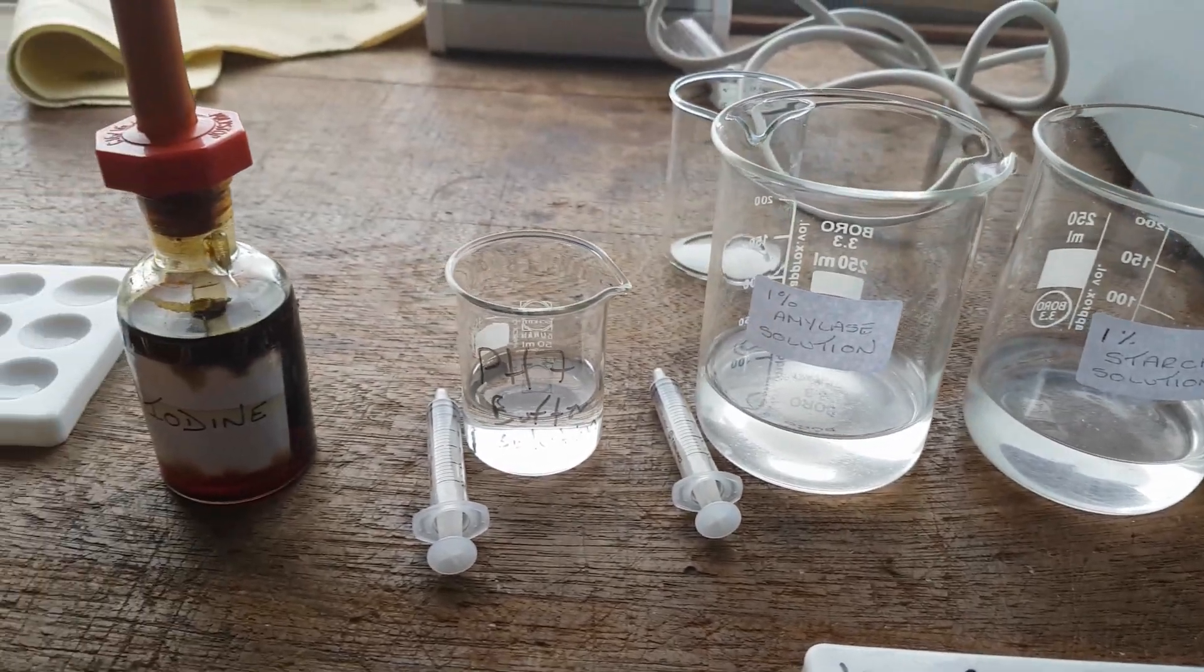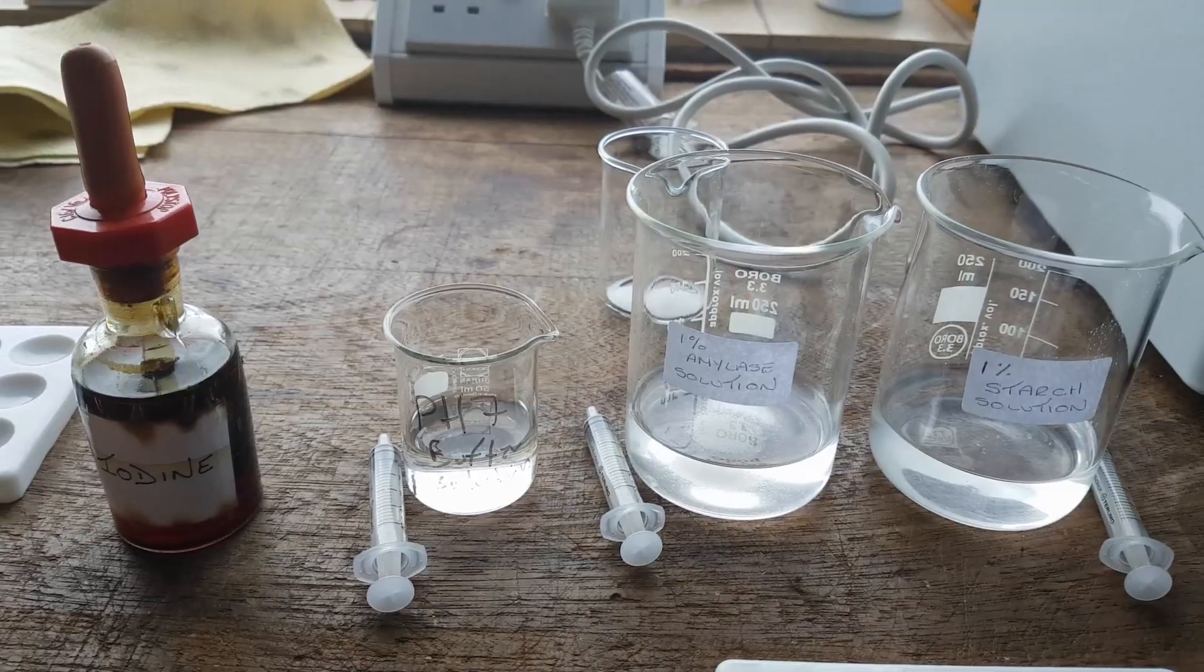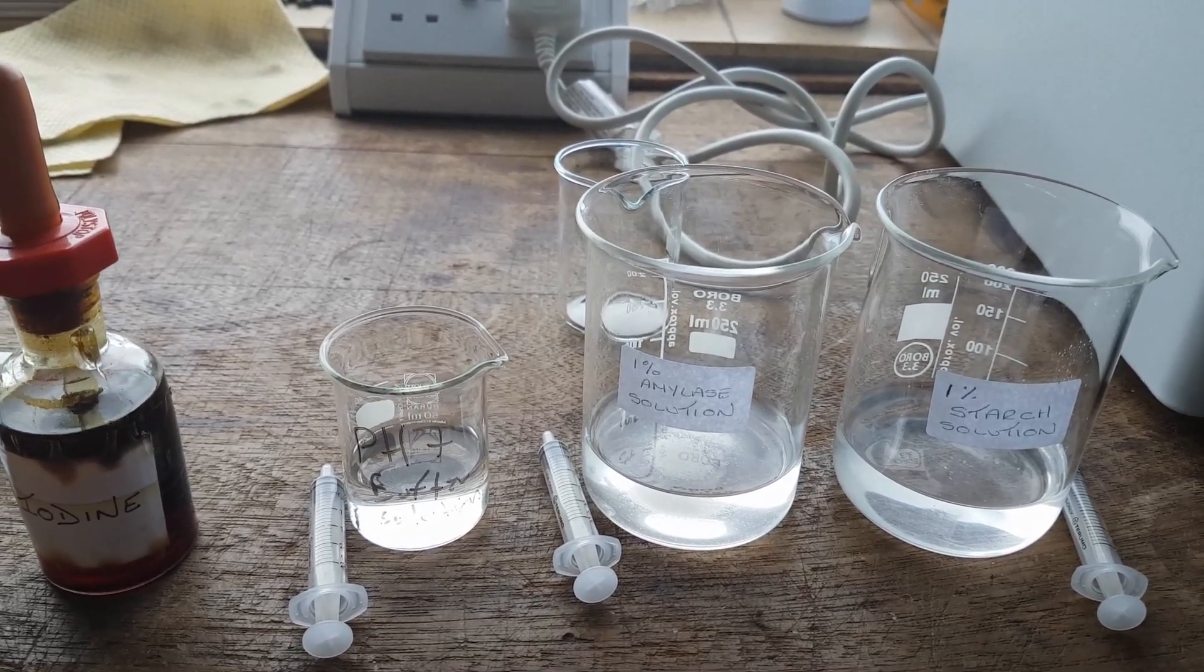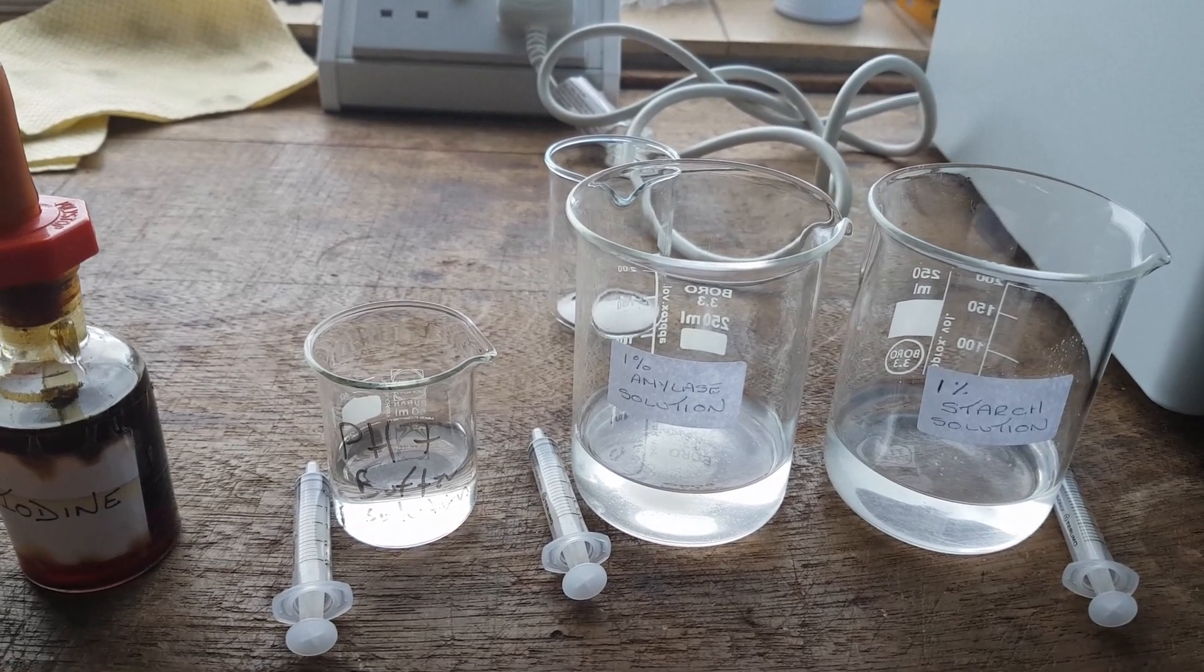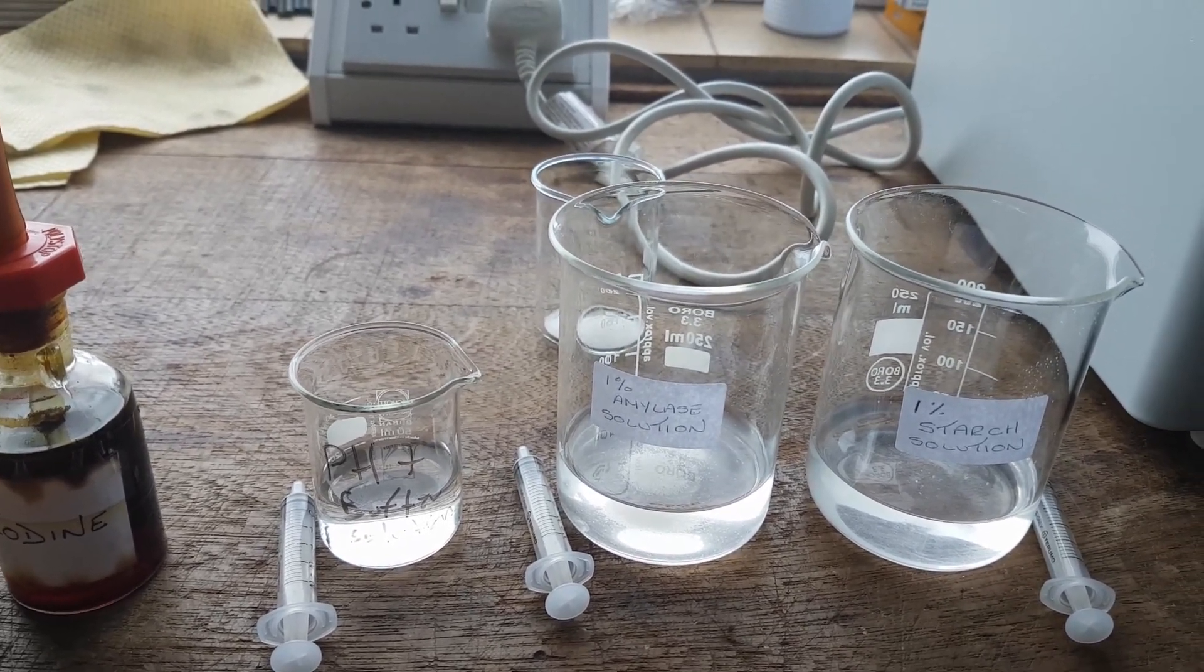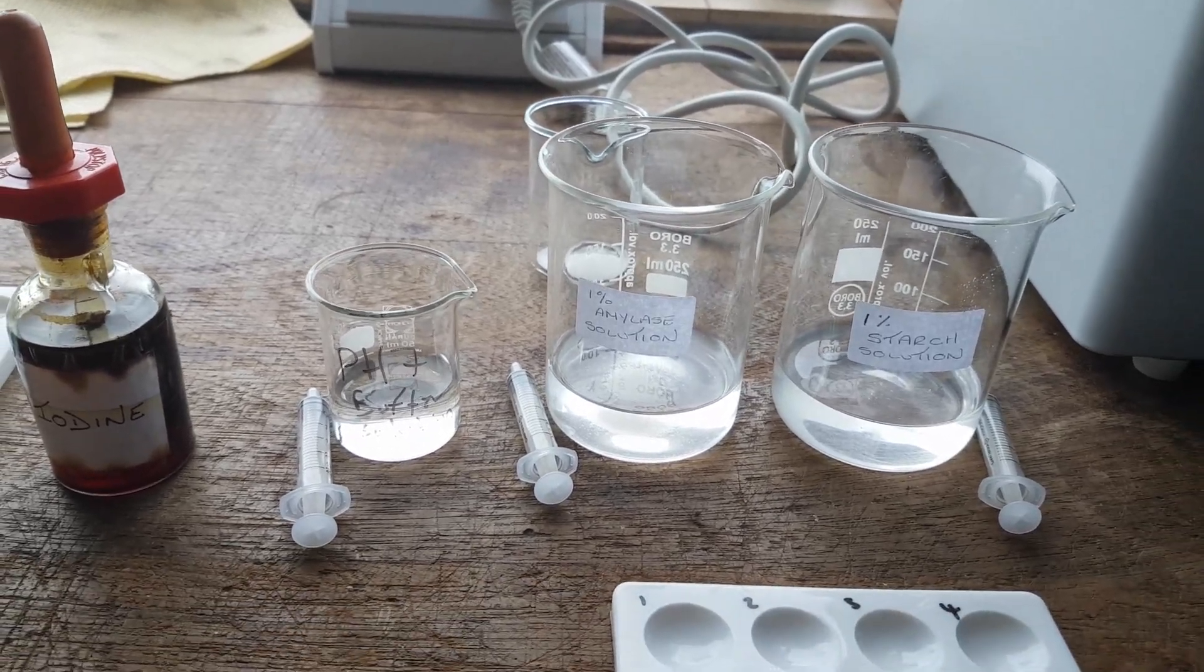Now, the whole point of this experiment is that iodine is an indicator for starch. So in other words, if you have starch and you place iodine into it, the iodine will turn blue-black color. I'm going to show you what a negative result looks like and then show you what a positive result looks like.